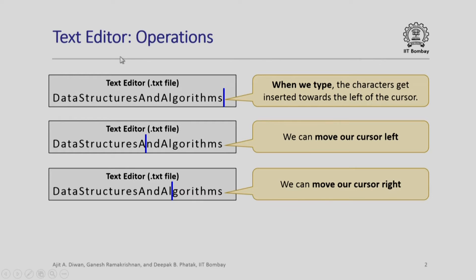You must have used either gedit on a Ubuntu Unix system or even a simple notepad in a Microsoft operating system, where you have some text and you want to edit that text. Typically you would see a cursor and this cursor can be moved left and right. Whenever we start typing on an empty file, the characters start appearing on the left of the cursor and the cursor keeps moving ahead to the right. In any text editor, we are able to move the cursor to the left or to the right.